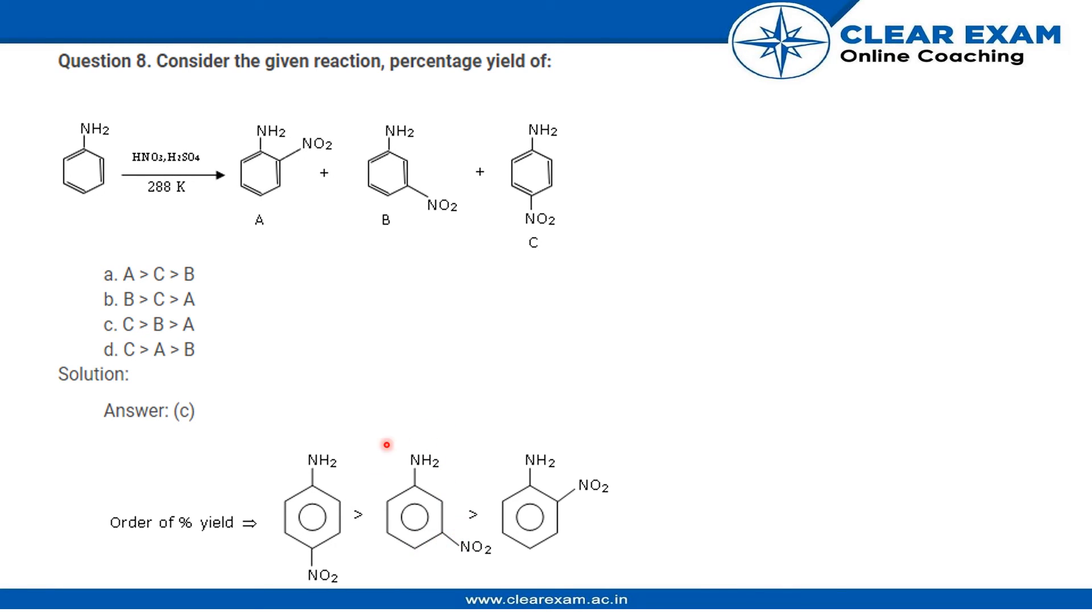It will be the next stable product and the most unstable product will be at position A. Therefore, the percentage yield will be directly proportional to stability and therefore we have C's yield to be maximum as it is most stable.